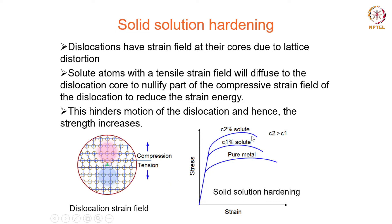The result can be seen in terms of a stress-strain diagram for three materials: one is the pure metal and the other two are alloys of particular compositions. As you increase the concentration of the alloying element or solute, the strength also increases because it causes more and more impediment to dislocation motion. As a result, strength increases as you increase the concentration of the alloying element. This entire phenomenon is therefore known as solid solution hardening or solid solution strengthening.